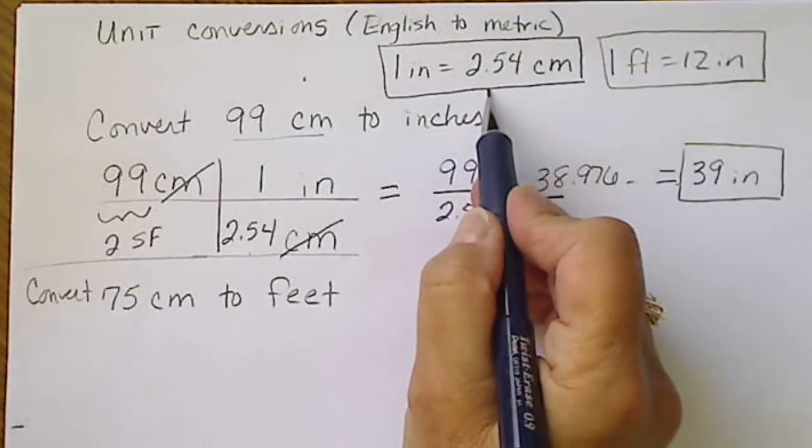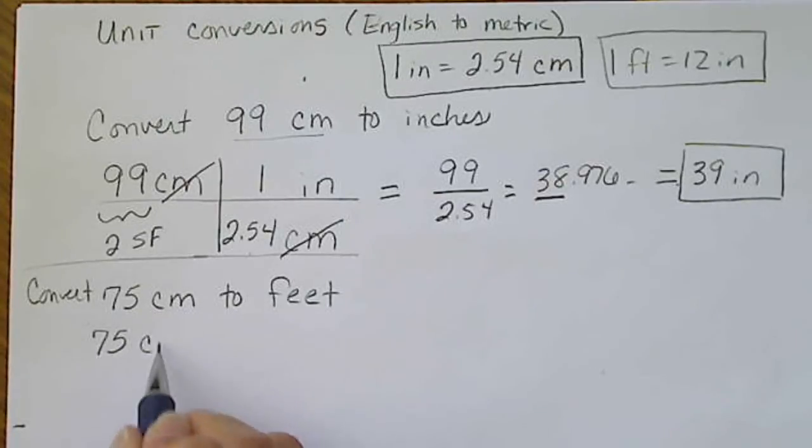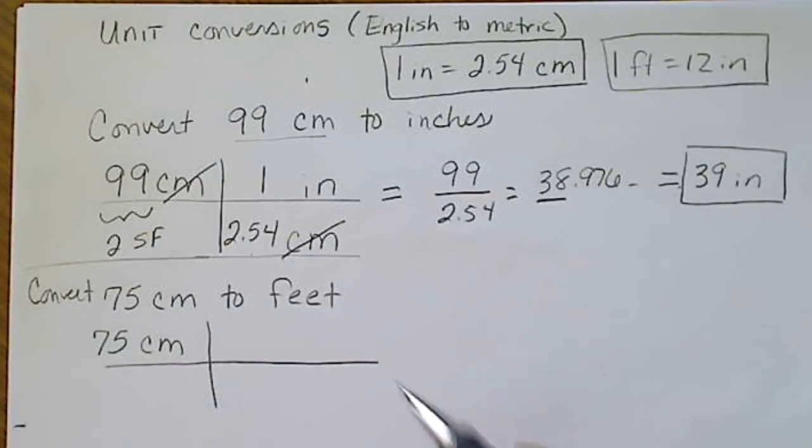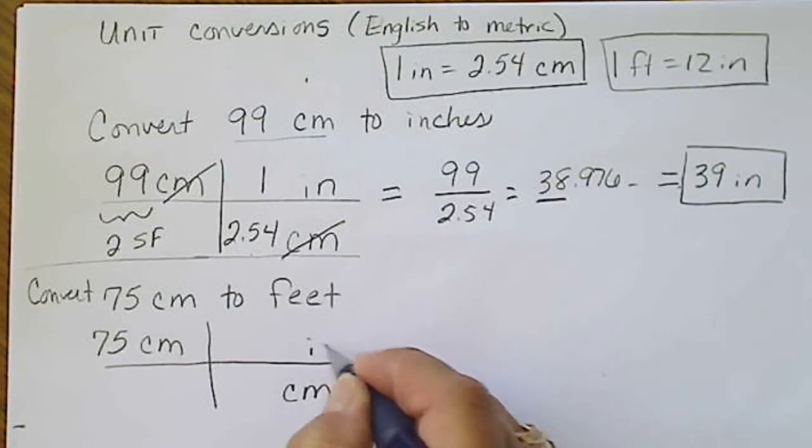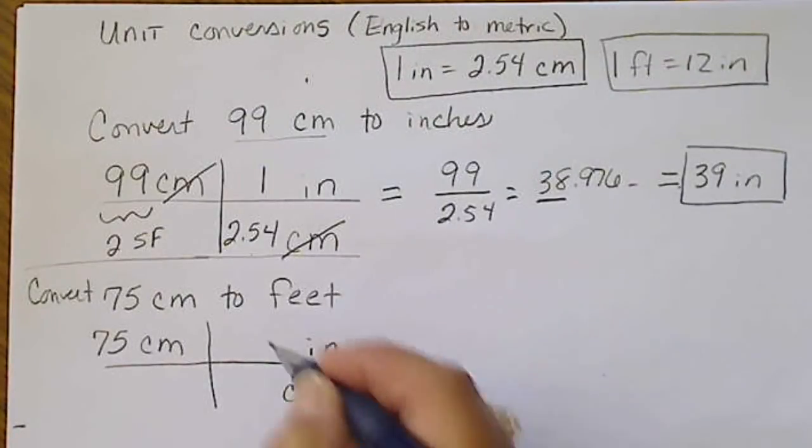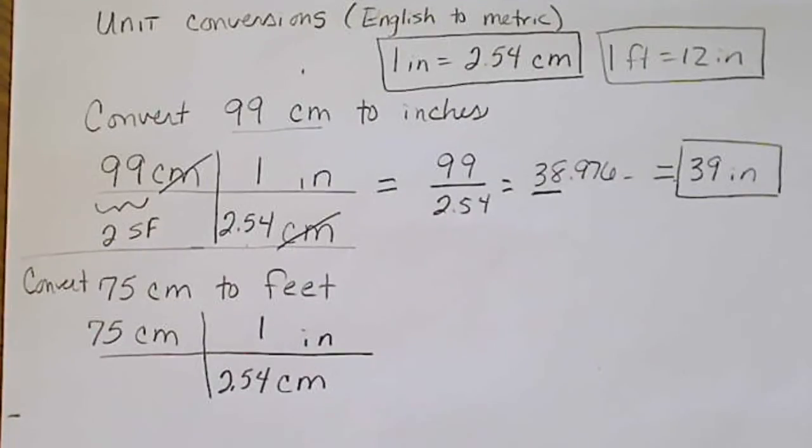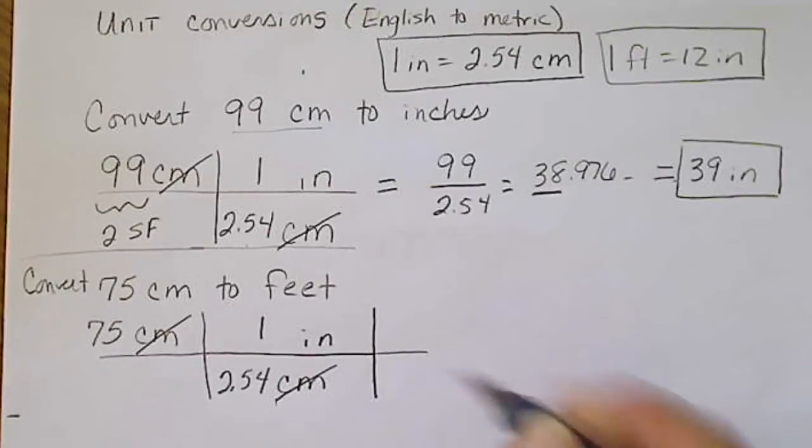Also, one foot is 12 inches. If you did not go to school in the United States, then you wouldn't know that any more than we know this. So we're going to start out again with the given unit, 75 centimeters, do one of these, and we can go from centimeters to inches. Again, we will put the unit centimeter here, the unit inch here. The one goes with the inch, the 2.54 goes with the unit centimeters. It's a good idea to actually pick up your pencil and cross off those units.